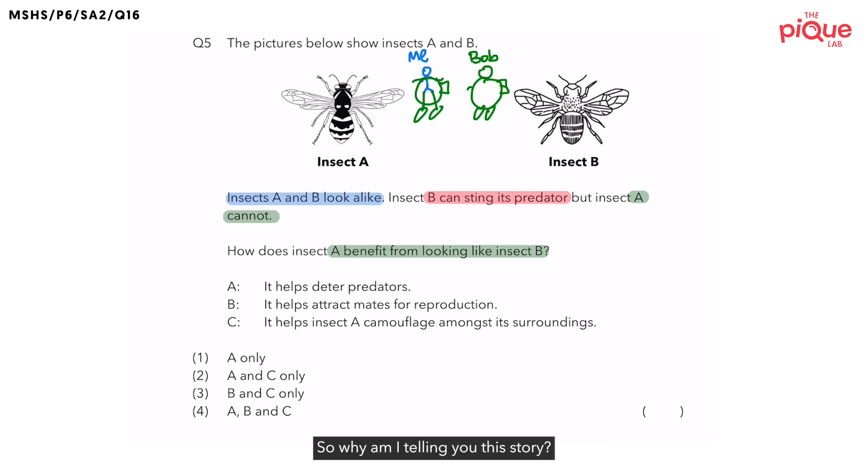So why am I telling you this story? Because in this question, there is also a bully. Do you think Insect A or Insect B is the bully? The bully in this question is Insect B because it can sting its predators. And when we look at Insect A, we realize that Insect A cannot sting its predators, so nobody is afraid of Insect A. What Insect A is trying to do in this scenario is to look like Insect B so that when predators see Insect A, they will mistake Insect A for Insect B, and will avoid feeding on Insect A.